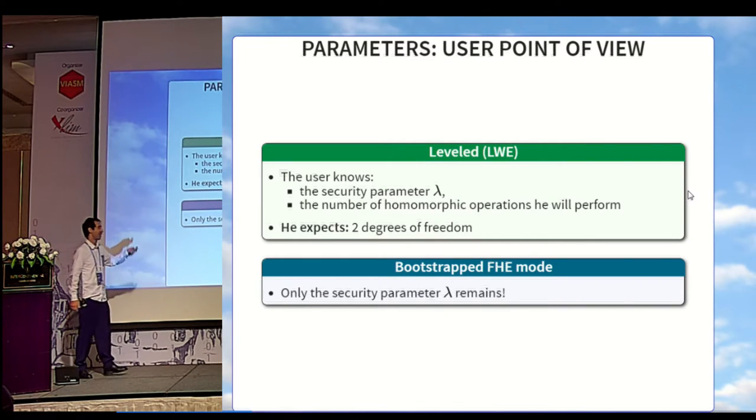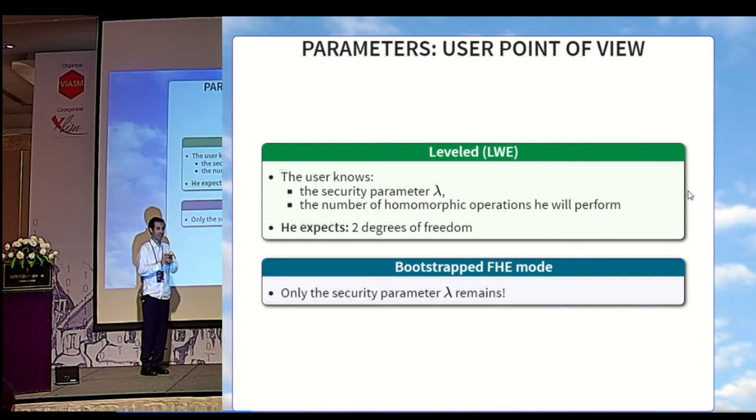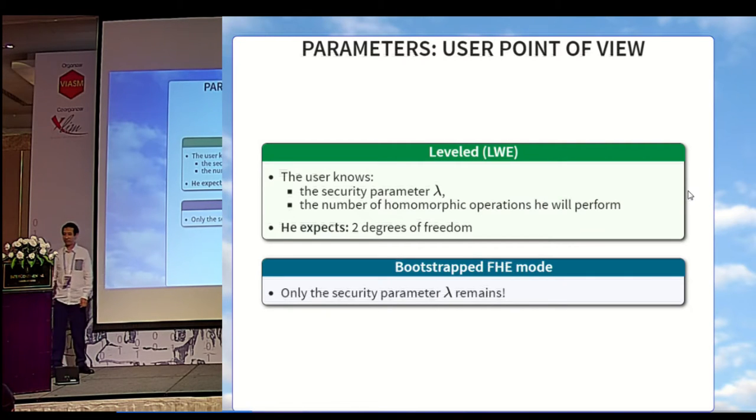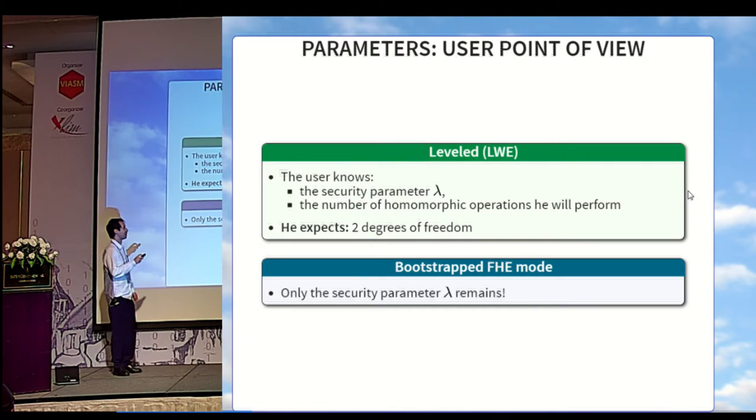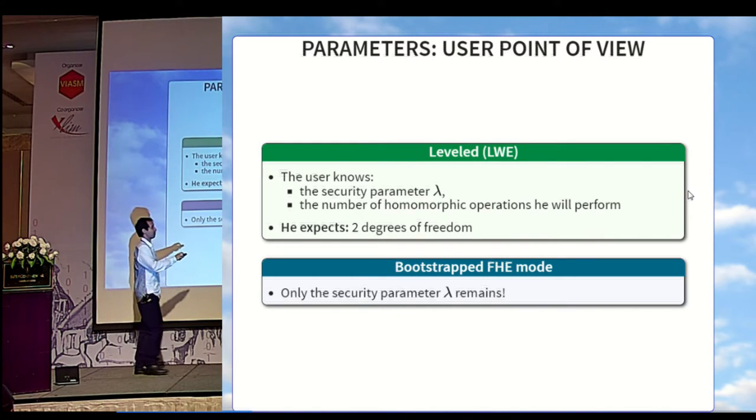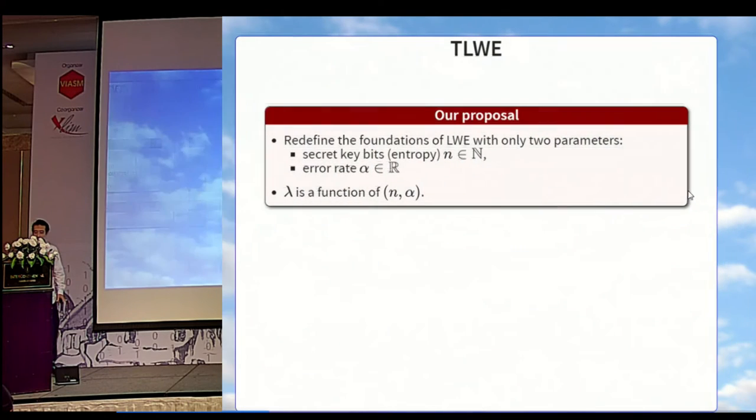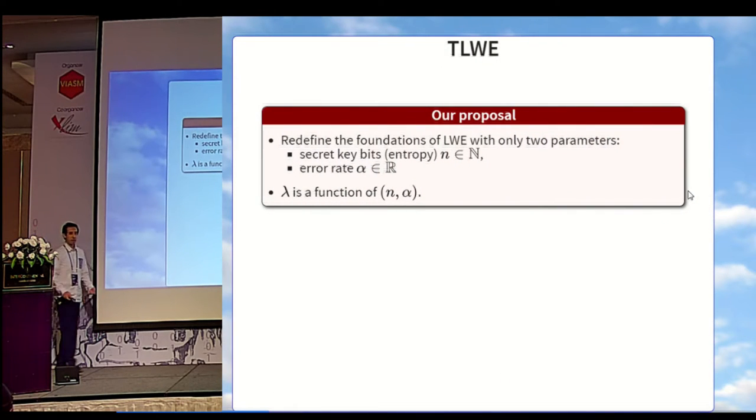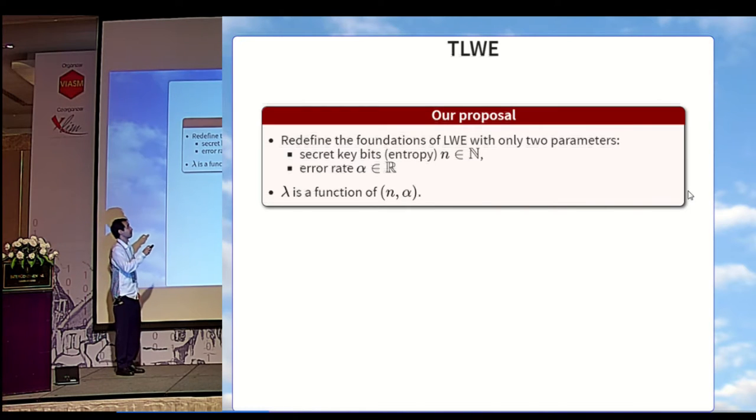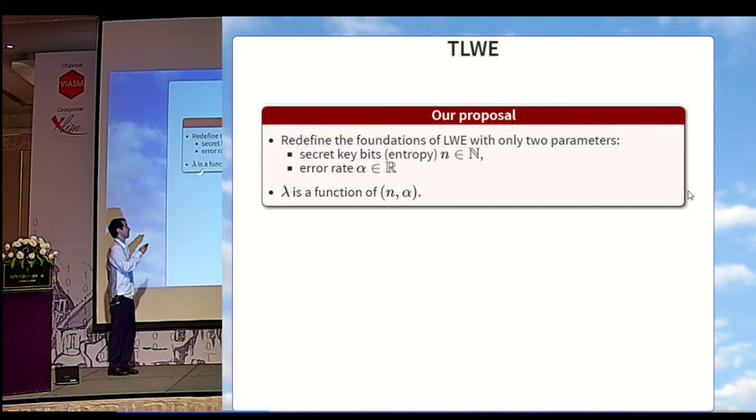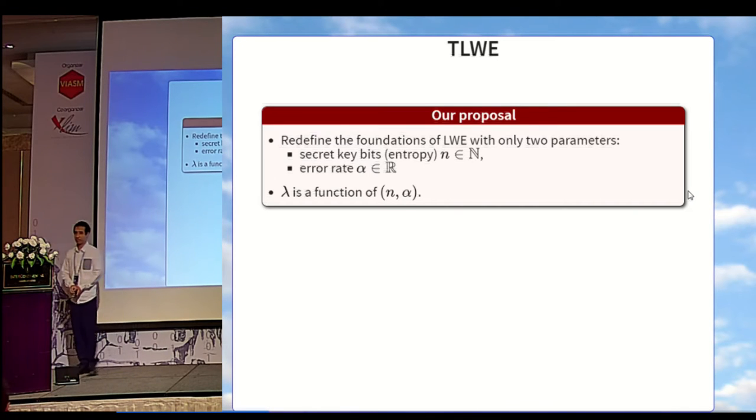The user knows exactly two things. The first one is the security parameter lambda, and the second one is the number of homomorphic operations he will perform. So that means he knows exactly two degrees of freedom. In the case of fully homomorphic bootstrap mode, the second one disappears because the number of operations is unlimited. But here, when we define L or LWE, we propose to redefine it with only two parameters. The first one will be the secret key size, and the second one will be the error rate alpha. Since we have only two degrees of freedom, it means that the security parameter has to be a function of these two parameters.